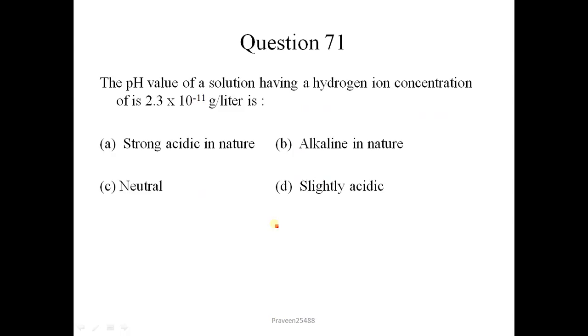Here is question number 71. The pH value of a solution having a hydrogen ion concentration of 2.3 into 10 to the power minus 11 gram per liter is alkaline in nature. Correct option is B.